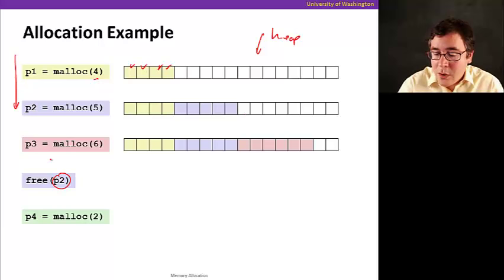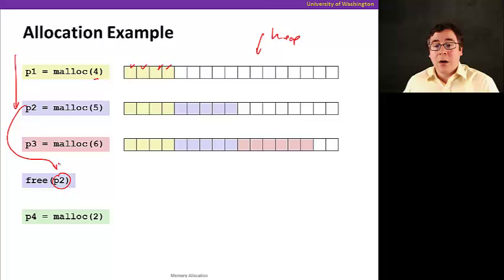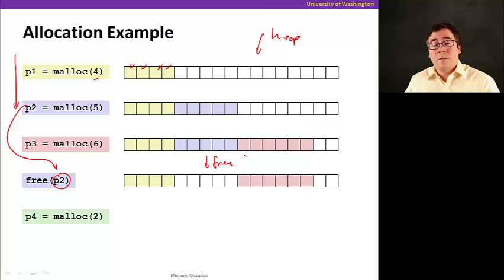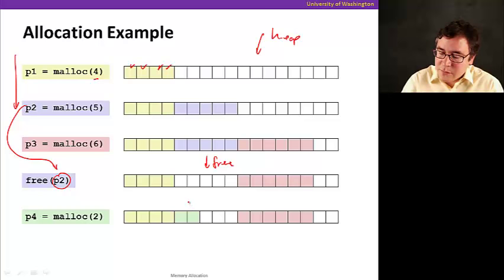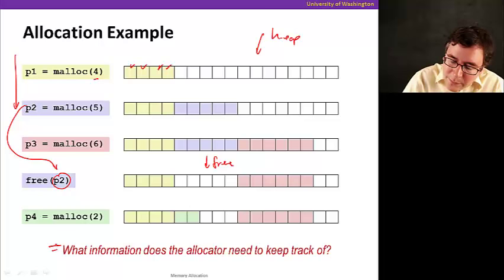Then now we're going to free p2, and note that we're passing as a parameter a pointer that was earlier returned by malloc. So when we do that, this block is now free. Now we have some holes in our heap. And then when I allocate two, we have two options, could go there, there. We just chose it to allocate it here, and so on.